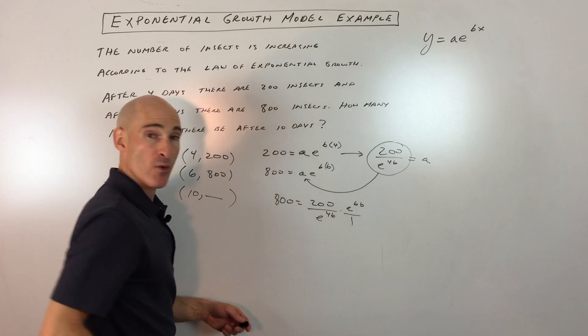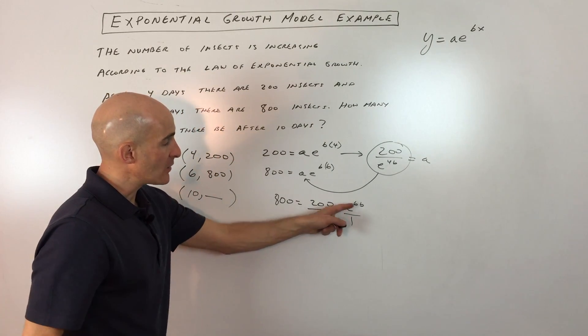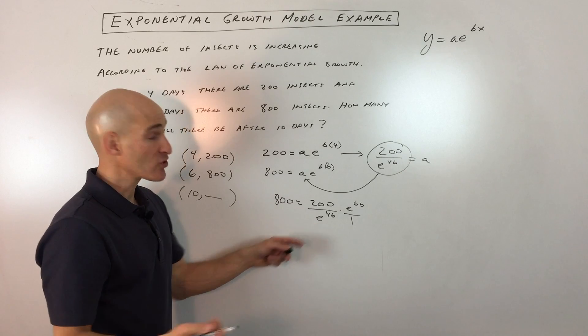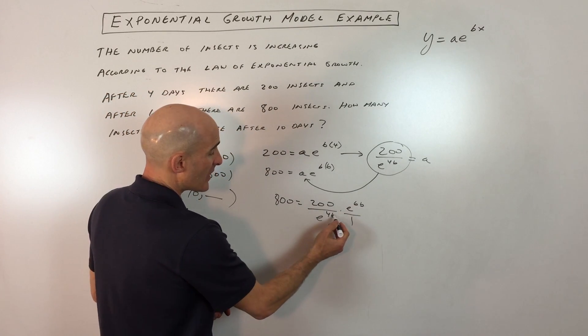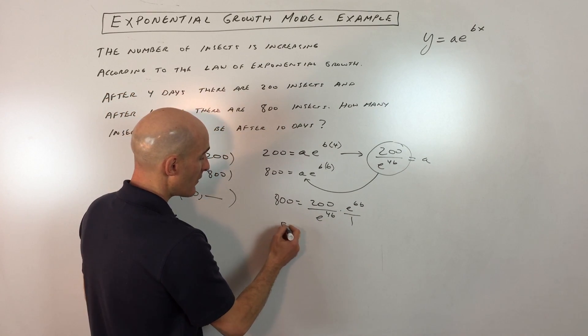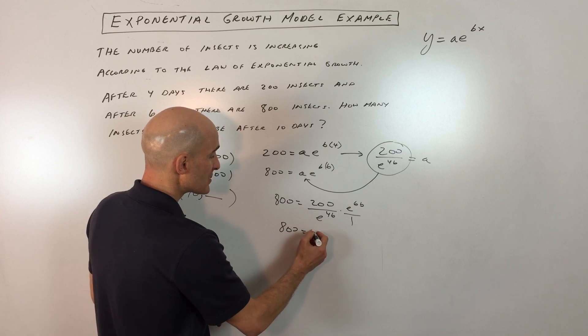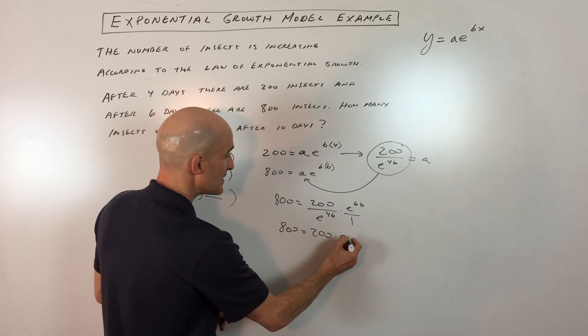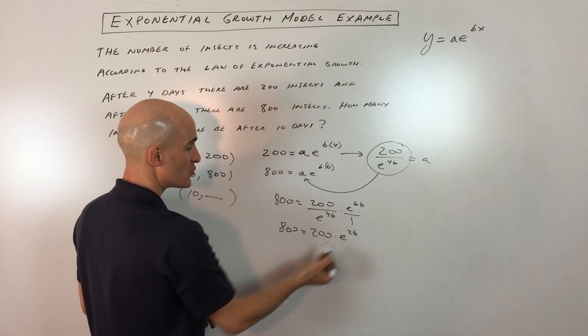When you're dividing, what do you do to the exponents if you have the same base? You subtract. So 6b minus 4b gives us 2b. We have 800 equals 200 times e to the 2b.